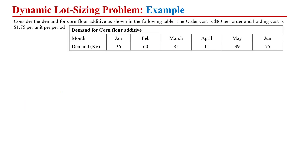The problem I am considering is one in which the order cost is $80 whenever we place an order, and the holding cost per unit per period is $1.75. Here we have the demand of that particular product, which is basically a corn flour.